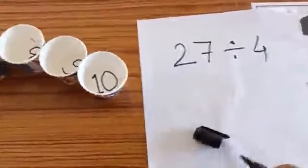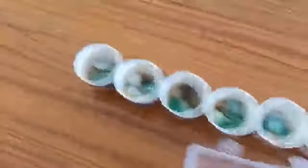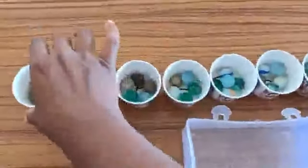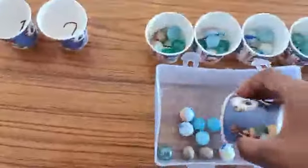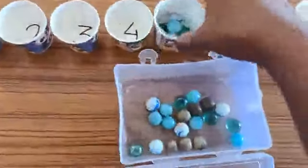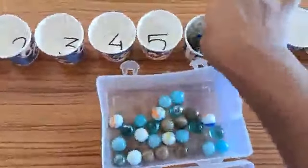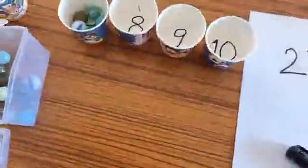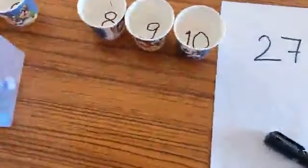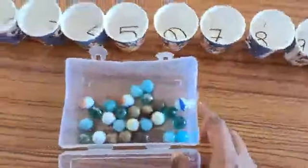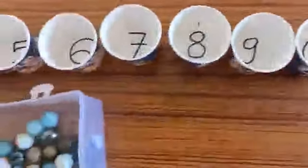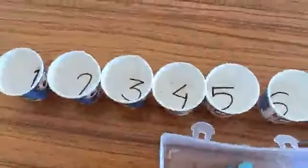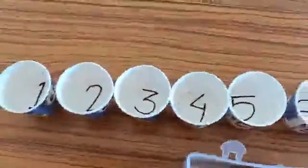27 divided by 4. Again, we have to arrange the numbers in sequence and collect 27 marbles. Here: 5, 10, 15, 20, 25, 26, 27. Again we have to arrange the numbers in sequence up to 10. Now here we have 27 divided by 4, so we have 27 marbles and we have to arrange these 27 marbles in 4 cups. Let's start.